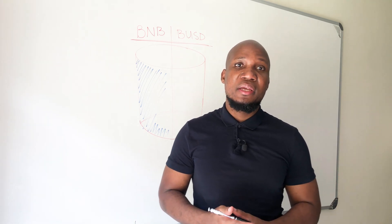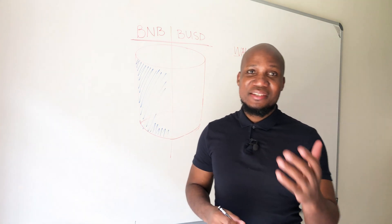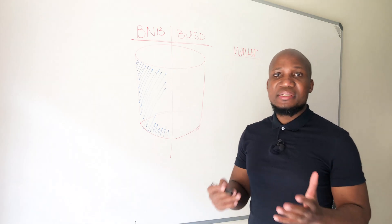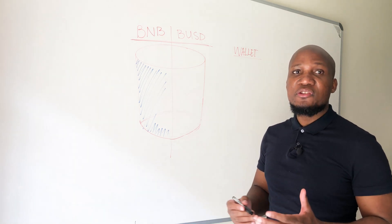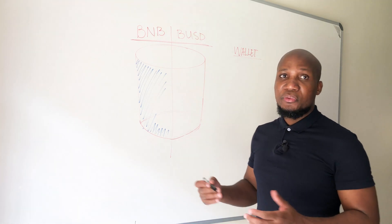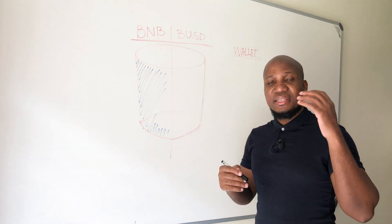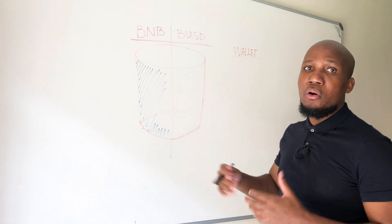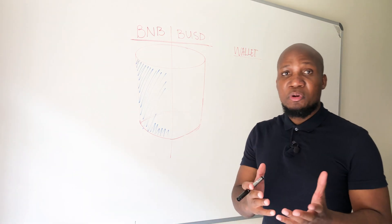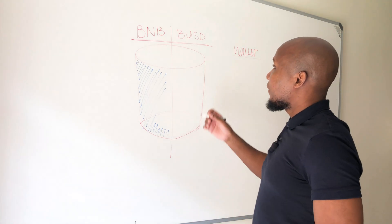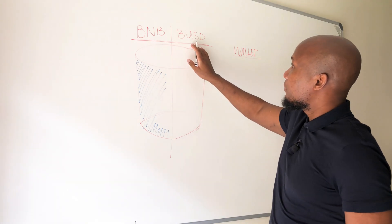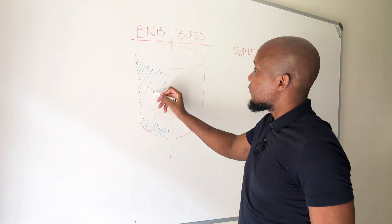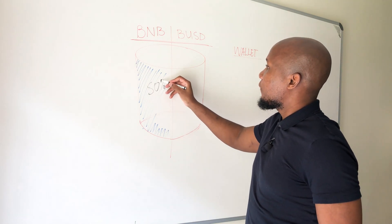We'll have a look at a practical example. To actually encounter impermanent losses, you have to be providing liquidity to a liquidity pool, and you have to provide an equal proportion of the funds you're depositing. Over here, we've got a liquidity pool of BNB and BUSD, which is a stablecoin. As mentioned, you have to provide 50% of each currency.